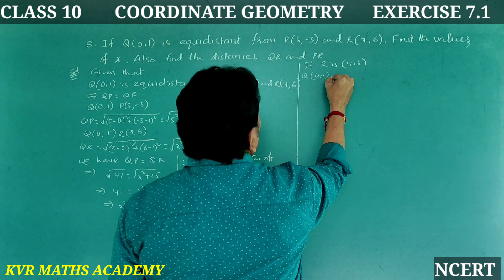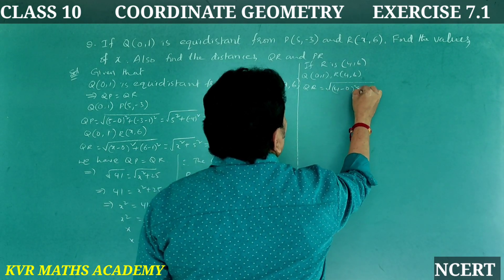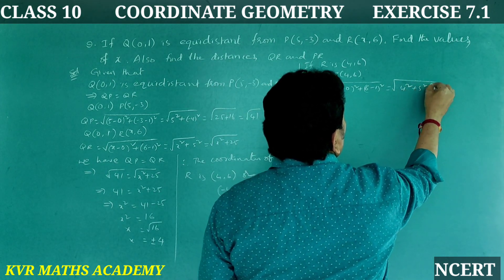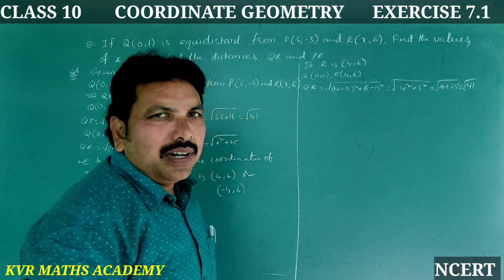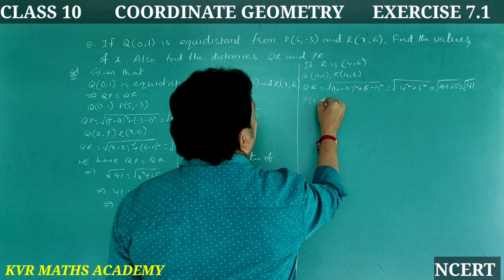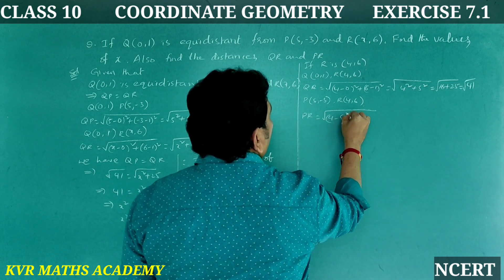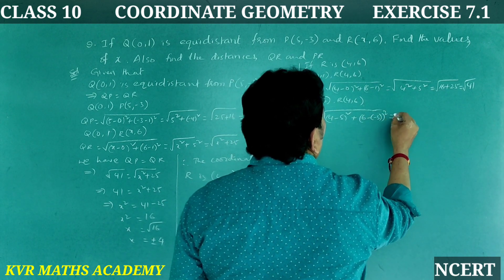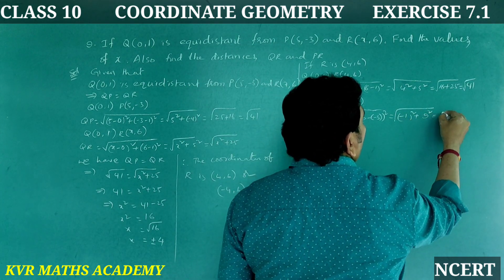If R is (4, 6): Q is (0,1) and R is (4,6). QR = √[(4−0)² + (6−1)²] = √[16 + 25] = √41. And PR: P is (5,−3), R is (4,6). PR = √[(4−5)² + (6−(−3))²] = √[(−1)² + 9²] = √[1 + 81] = √82.